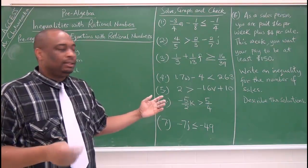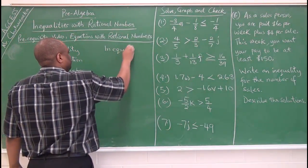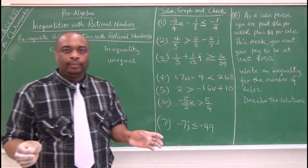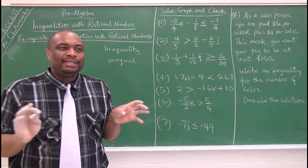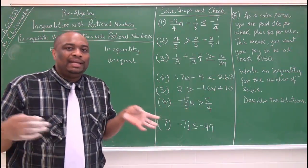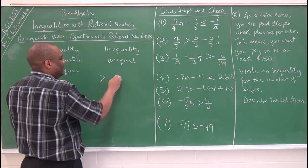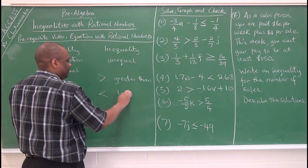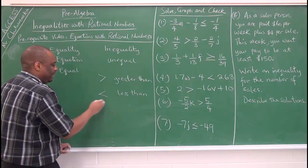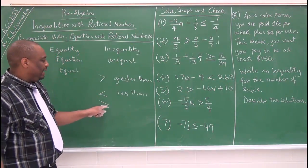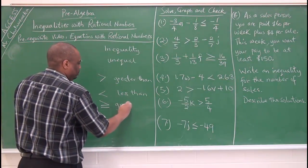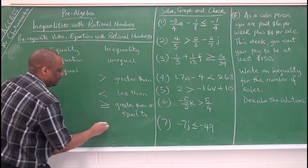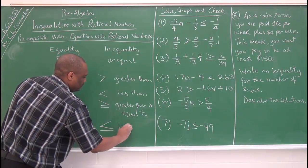When you come to inequality, meaning unequal, that means it is not equality — there is now a side that is greater or a side that is less. You have the greater than sign and the less than sign. It is also possible to have greater than or equal to, and less than or equal to. We are going to use these signs in this video.